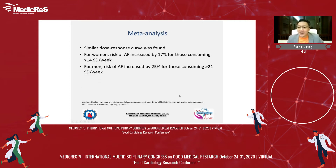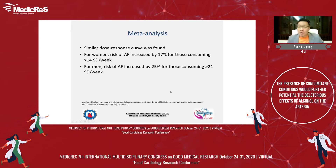How about the data from the meta-analysis world, which equally we should pay respect to? They found a similar dose-response curve. For women, the threshold is slightly lower — the risk of AF increased by 70% for those consuming 14 standard drinks per week, which is in the moderate consumption range we defined earlier. For men, the threshold is a little bit higher, but if we drink more than 21 standard drinks per week, we increase the risk by 25%.